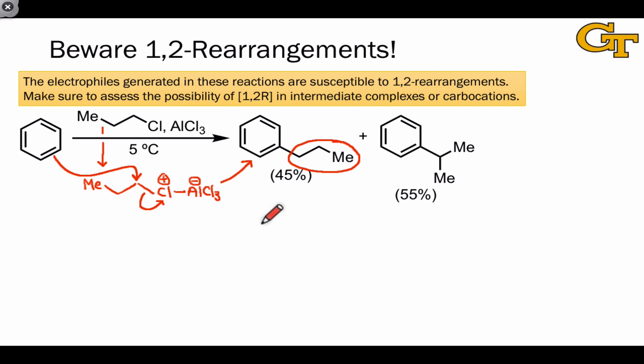However, this isn't the major product. This is only 45% of what we observe. Most of what we observe contains an entirely different alkyl group within the substrate, the isopropyl group. Where on earth does this isopropyl substituted benzene come from? How did we get a carbocation on the secondary position within the starting alkyl halide?